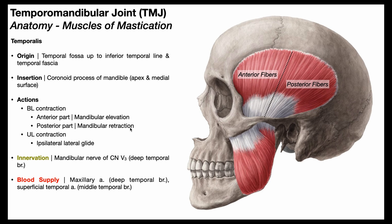If the temporalis only contracts on the left side or only on the right side, that produces ipsilateral lateral glide. For example, if the left temporalis contracted but the right one did not, the mandible would laterally slide or glide to the left. If the right temporalis contracted, we'd get right lateral glide of the mandible.